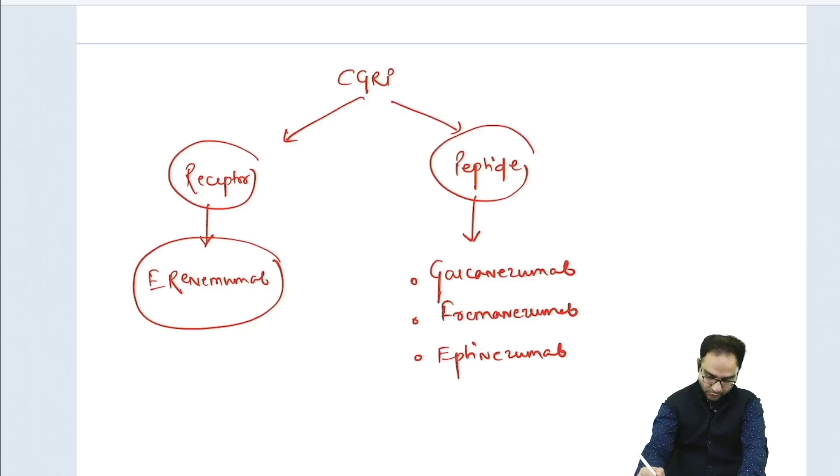This is the important difference that you need to remember. The potential question that can be asked is about erenumab. Erenumab can be asked about its mechanism of action. First, it is a monoclonal antibody. Second, it is a CGRP receptor antagonist.